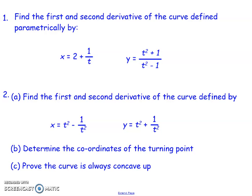First thing, I've given you two equations, x and y, in terms of t. I want you to find the first and second derivative of these. Then the second one, a slightly more complex question: the first and second derivative, then the coordinates of the turning point, and then prove the curve is always concave up. So pause the video and have a crack at these.